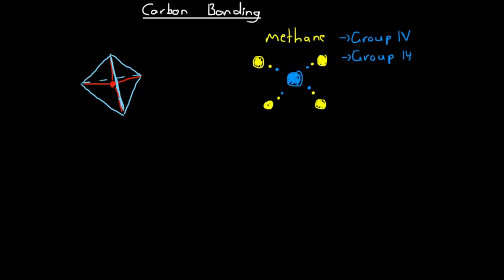Covalent bonds are in fact just clouds of charge. With 4 bonds we have 4 clouds of charge, and since electrons are negative, each of these clouds is negatively charged. That means all these clouds of charge are going to repel one another — they want to get as far away from one another as possible. Like charges repel, so these electron pairs want maximum separation. When a carbon atom forms 4 bonds with 4 different atoms, its 4 bonds will be as far apart in 3 dimensions as they can possibly be.